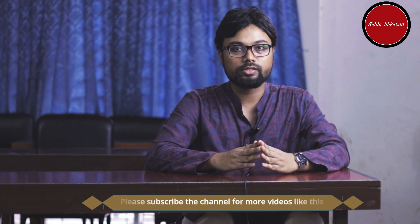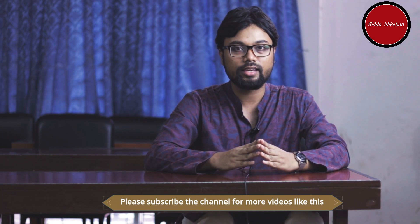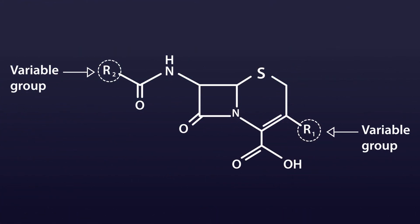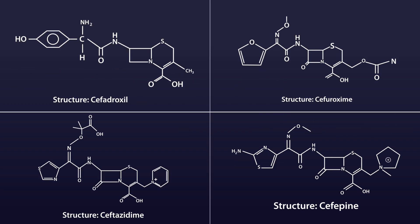Cephalosporins are near cousins of penicillin as they have beta-lactam rings in their structure as well. We can see the structures of Cephalosporin here. Notice the R1 and R2 groups — these are variable groups found in the structure. By changing R1 and R2, we pharmacologists created different Cephalosporins, such as Cephadroxyl, Cephuroxime, Ceftazidime, and Cefepime — all with different R1 and R2 structures but a similar constant group.